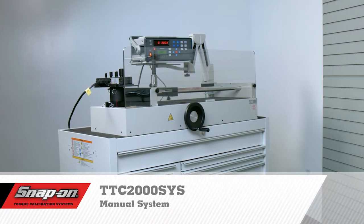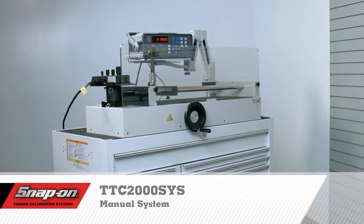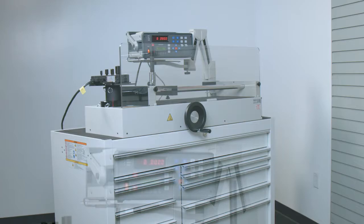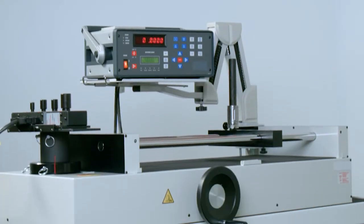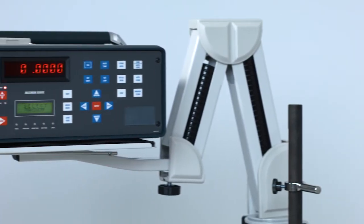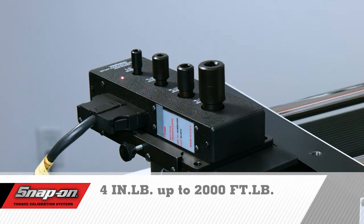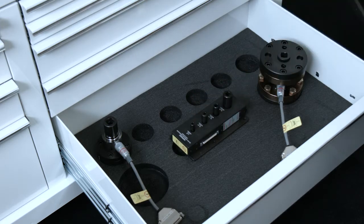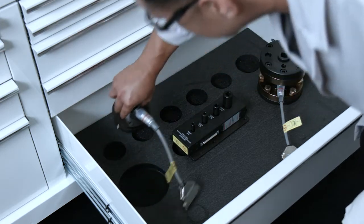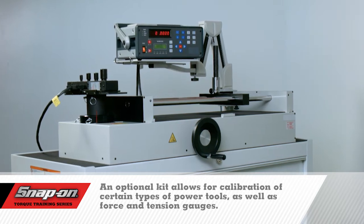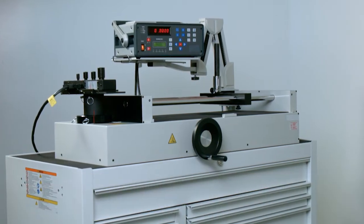Now we will take a look at the TTC2000SYS, Snap-On's high-capacity manual torque calibration system. The TTC2000SYS system comes complete and ready to use, with a total torque range of 4-inch-pounds up to 2,000 foot-pounds. Optional transducers down to 5-inch ounces are available. With the purchase of optional kits, it can also calibrate certain types of power tools, as well as force and tension gauges.